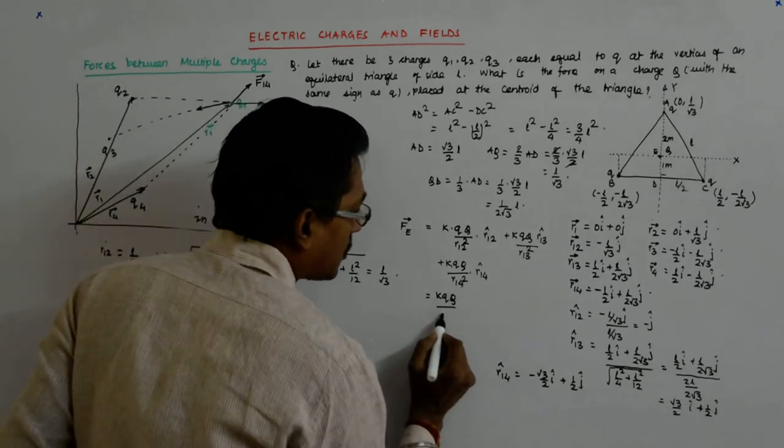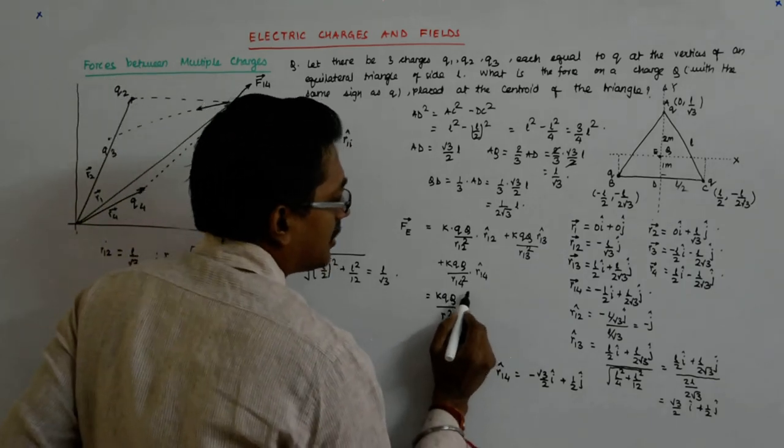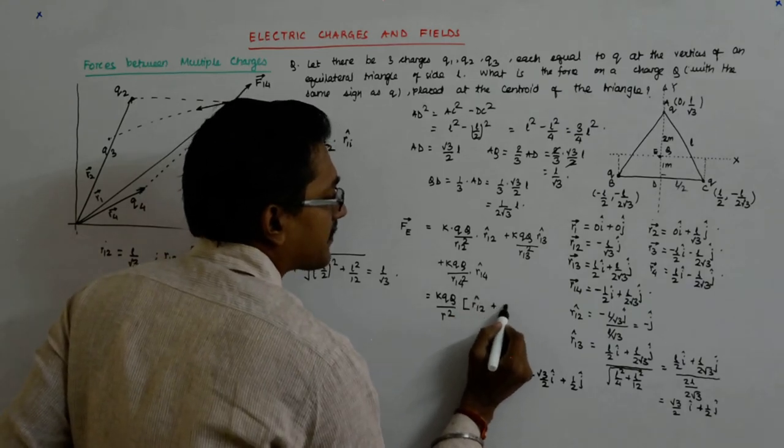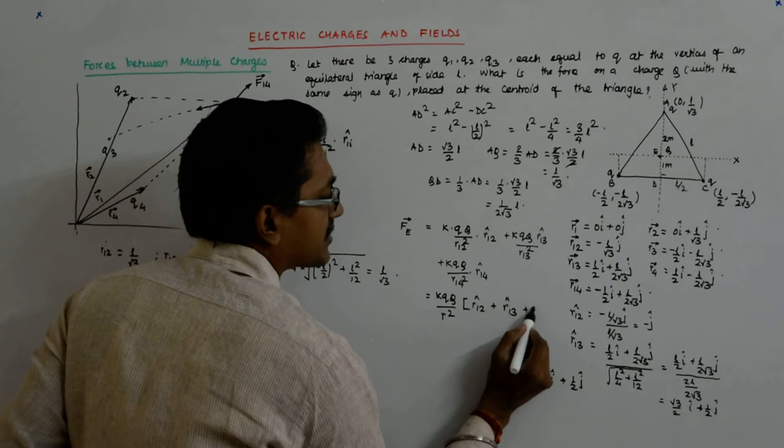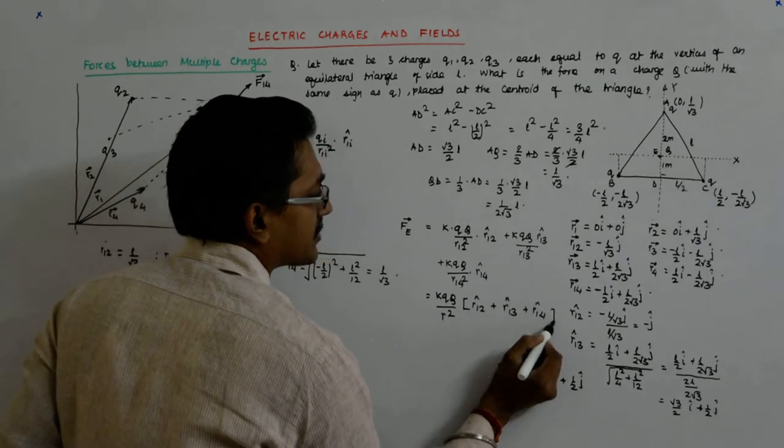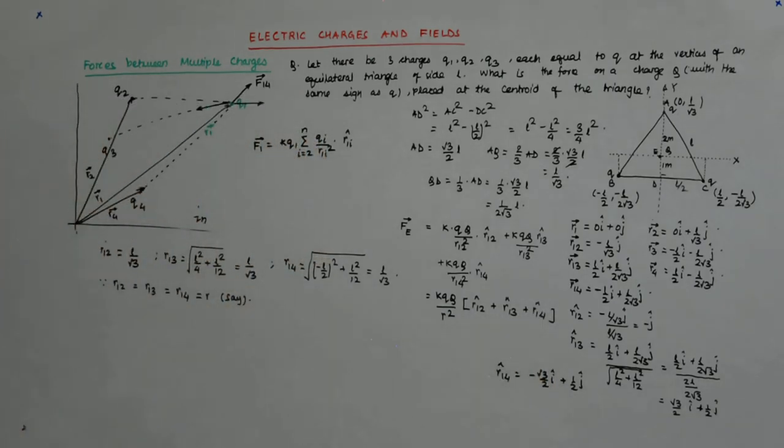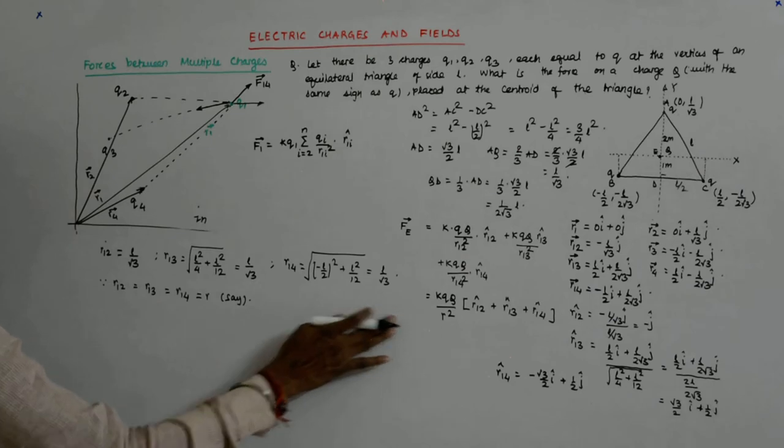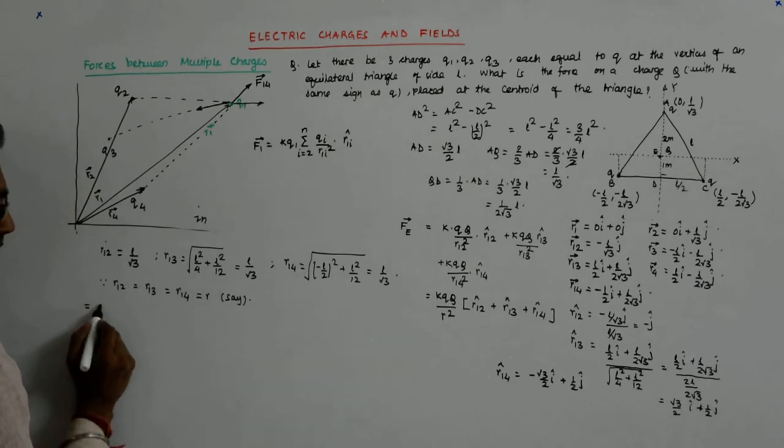So what do I do? I take this as R and pull it out. So, KQQ upon R square, so what am I left with? I said, I just have to sum the unit vectors, the three unit vectors, do we see that? Okay, now what does that become? So, I'm writing it from here, I'm writing here, please pay attention.